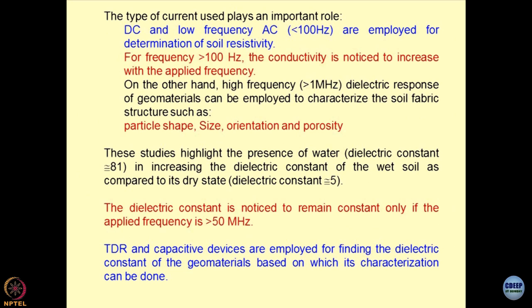As discussed, DC and AC have their own strengths and limitations. AC is quite useful as far as microstructure mapping of soils or geomaterials is concerned. But when you go beyond 100 hertz, it requires special equipment and special paraphernalia also.